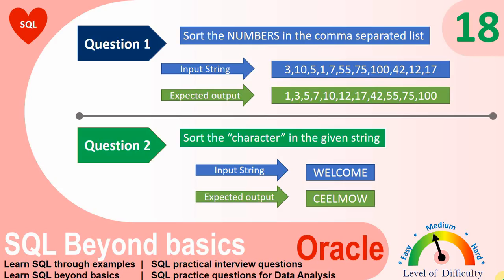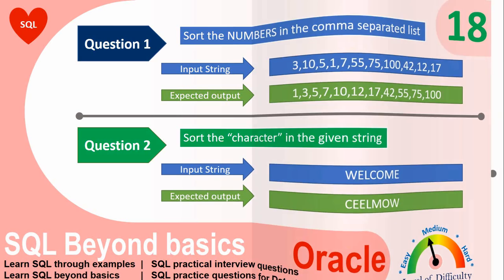The second question is very similar to the first. The expectation is to write a query to order the characters of a string — the given string has to be ordered either in ascending or descending order. For example, if the input string is 'welcome', we need to return the characters sorted either in ascending or descending order.